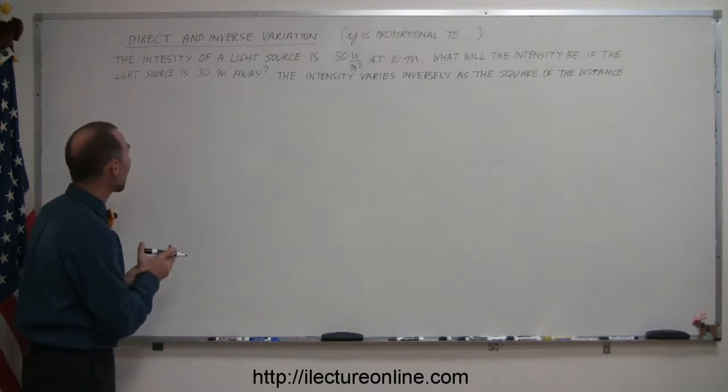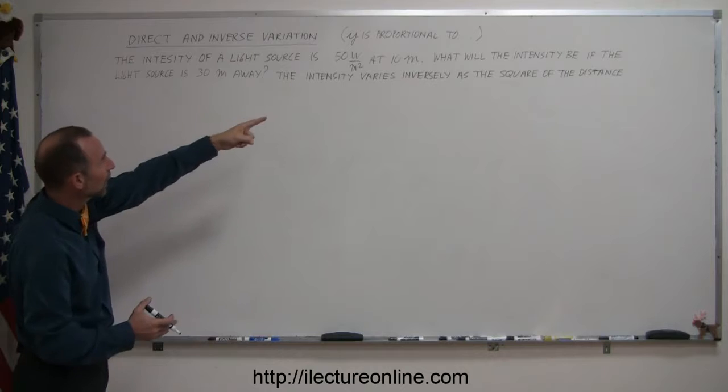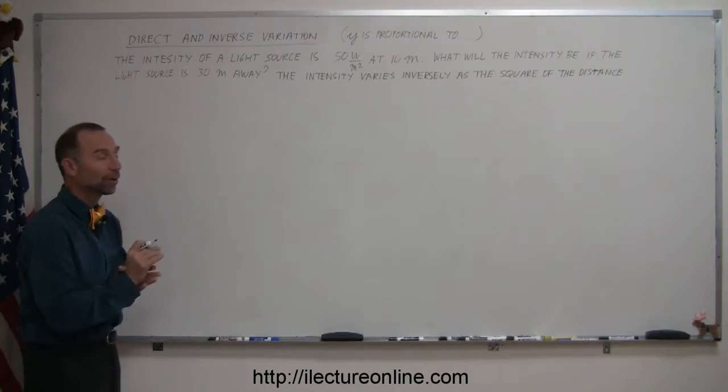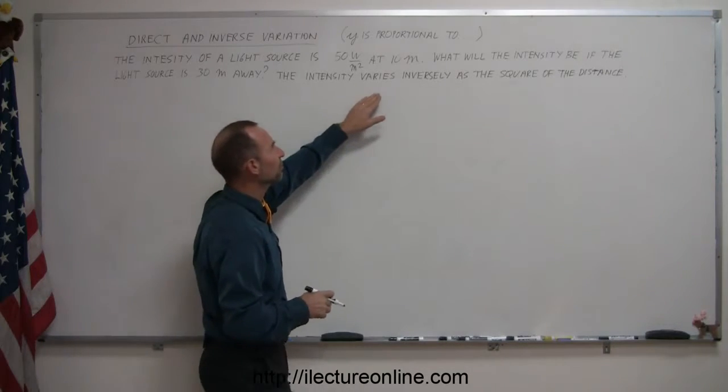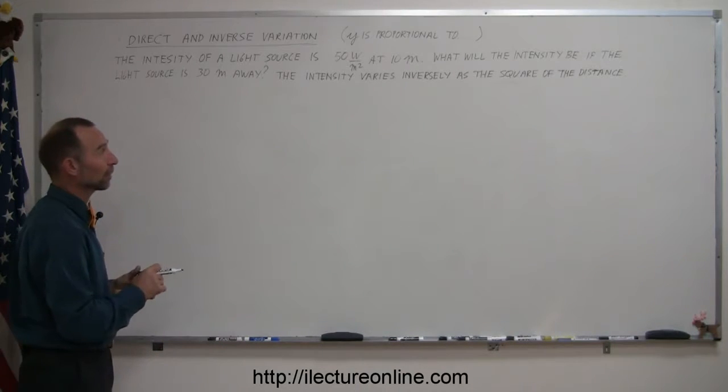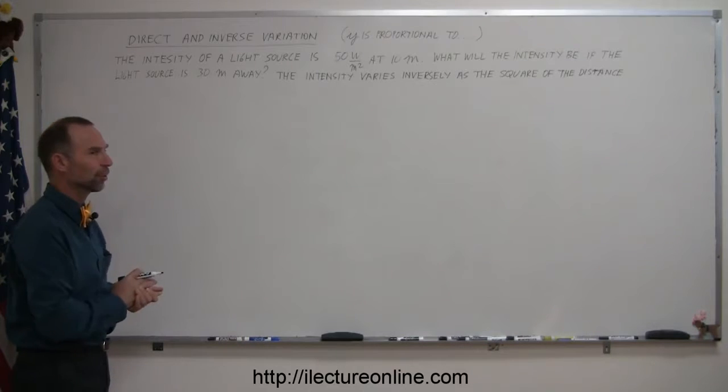Here we're dealing with a problem where we have a light source. The light source is 10 meters away, and at 10 meters it gives you an intensity of 50 watts per square meter. They tell us that the intensity varies inversely as the square of the distance. And they now also want us to figure out what the intensity will be if the light source is placed 30 meters away.